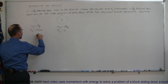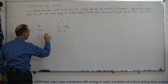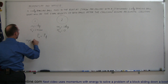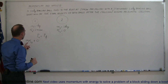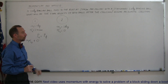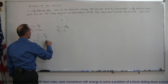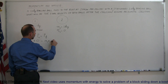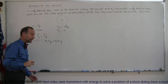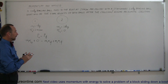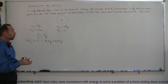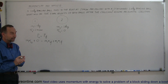Starting out, we say momentum initial equals momentum final — that's always the case. The momentum initial will be m1·v1 initial plus 0, since the second ball has zero velocity. That equals m1·v1 final plus m2·v2 final, which are both what we're looking for. Now we have one equation and two unknowns, so we can't solve two unknowns with just one equation — we need a second equation.